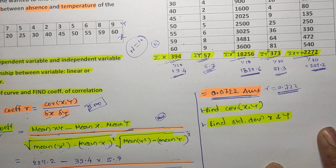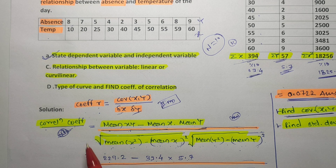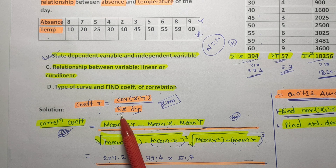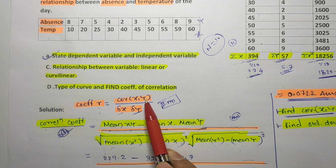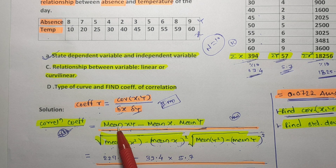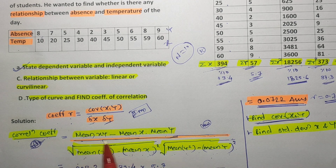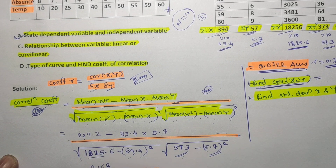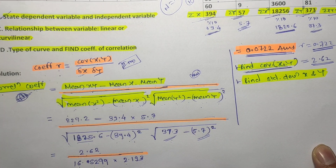If the same example also asks you to find the covariance of X and Y, note that the formula for r has covariance(X,Y) in the numerator. So the covariance is simply the numerator value of that formula. In this case, covariance(X,Y) = 2.62.